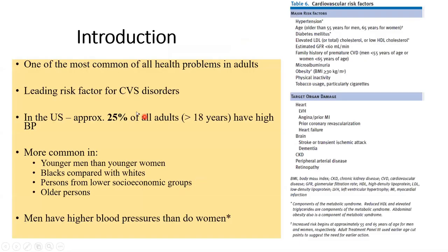We start with hypertension. Hypertension is basically a sustained high blood pressure above normal — we will go into that in a bit. It is one of the most common health problems in adults globally.